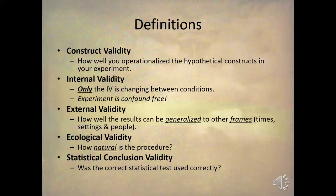External validity is how well the results can be generalized to other frames — meaning other times, such as whether we can generalize the results of an experiment from 1960 to today; other settings, such as whether we can generalize results from an experiment in Amsterdam to the United States; and other people, such as whether we can generalize results from a study done on men to women.